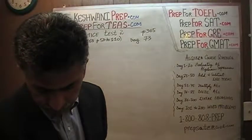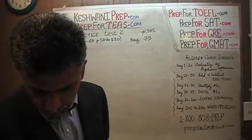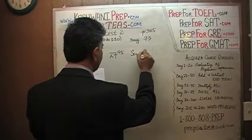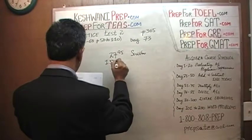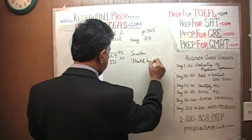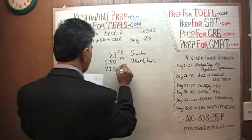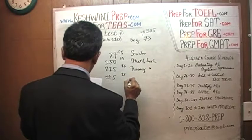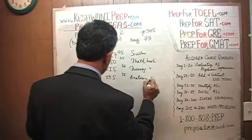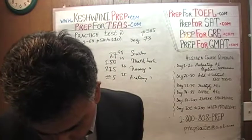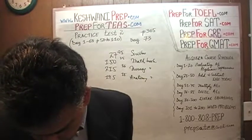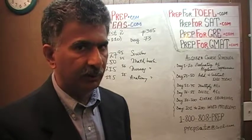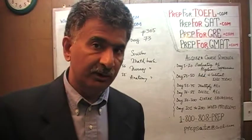Problem number 9 says: a nursing student is purchasing books and supplies for the upcoming semester. She is going to pay $27.95 for scrubs, $150.25 for the math book, $215.16 for the nursing book, and $195.15 for anatomy books. The question simply is: which of the following is an accurate estimate of the cost for the semester? They don't expect us to figure out the exact answer — we are allowed to estimate here.